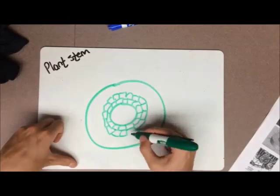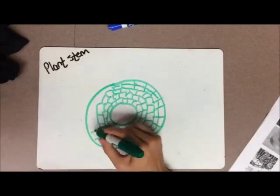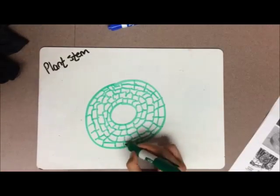The cortex is the outermost layer of the stem or root in a plant, bounded on the outside by the epidermis and on the inside by the endodermis.